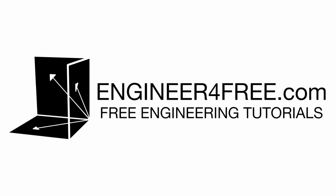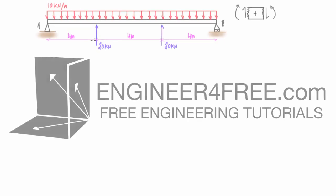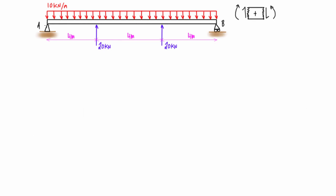Welcome back. In this video we are looking at example number three for drawing shear force diagrams and bending moment diagrams. In this case we have a simply supported beam with a distributed load that goes right across the top and two point loads pressing up from the bottom of the beam. First of all we need to determine our reactions at A and B.